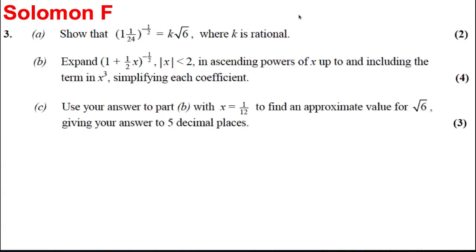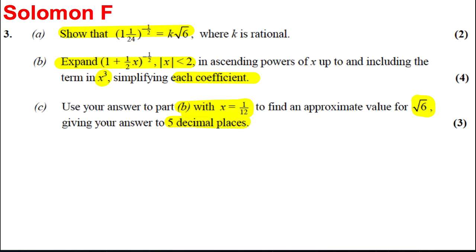Here's another binomial theorem question. It starts off asking us a SIRS type question, which is quite straightforward, then an expansion question up to x cubed, simplifying, and then using your answer to part B with x as a twelfth, find an approximate value for root 6 to 5 decimal places. Let's start the first part.